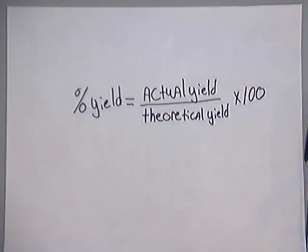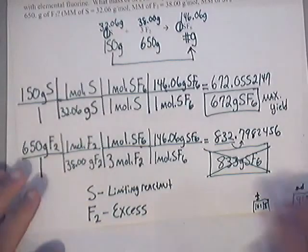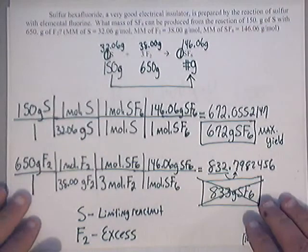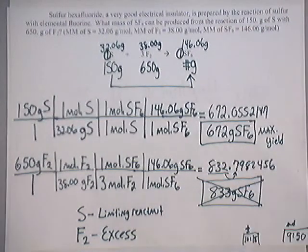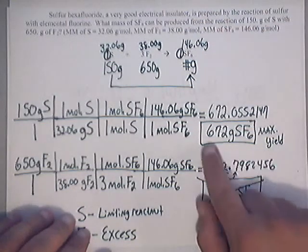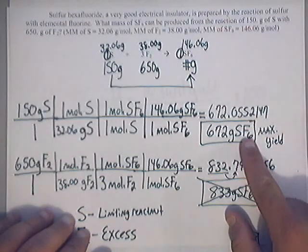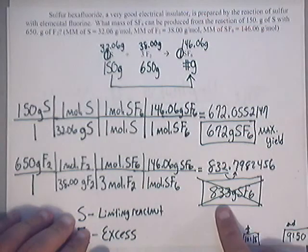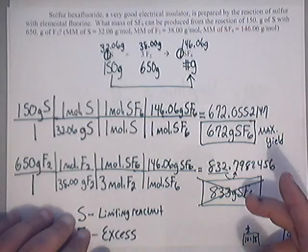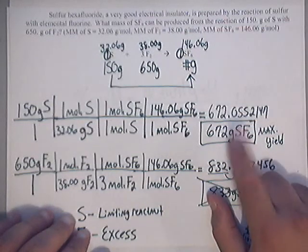Let's look back at a problem that we did from the other day. This was a limiting reactant problem, and usually that's when you see percent yield problems and questions. Here, we get a max yield of 672 grams of sulfur hexafluoride, and we ended up getting 833 grams of sulfur hexafluoride — that's too much on that one, which is why we chose this.